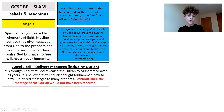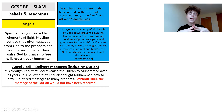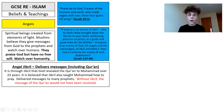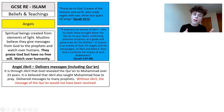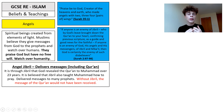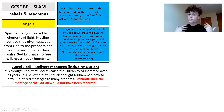Angel Jibril is the key angel who delivers messages, including the Quran. It is through Jibril that God revealed the Quran to Muhammad over a period of 23 years. It is also believed that Jibril taught Muhammad how to pray and delivered messages to many prophets. He is a very important messenger, because without Jibril the message of the Quran would not have been received and therefore Islam would not have been founded by Muhammad.